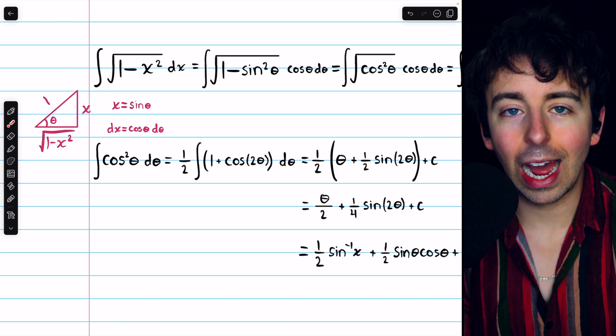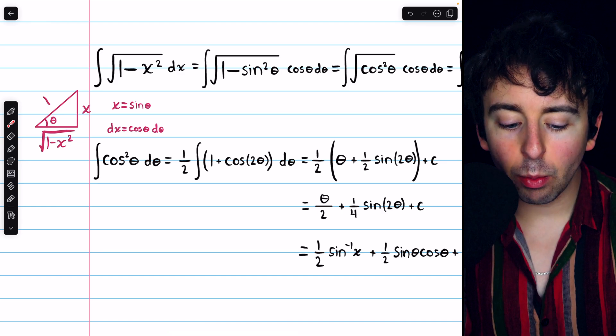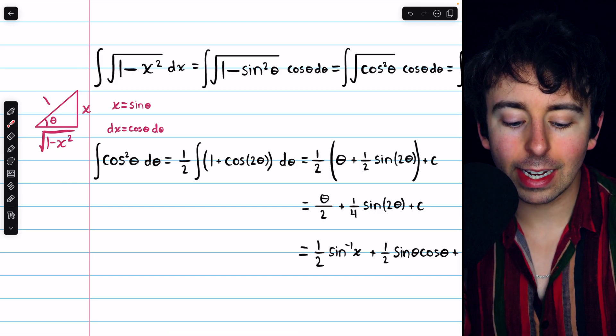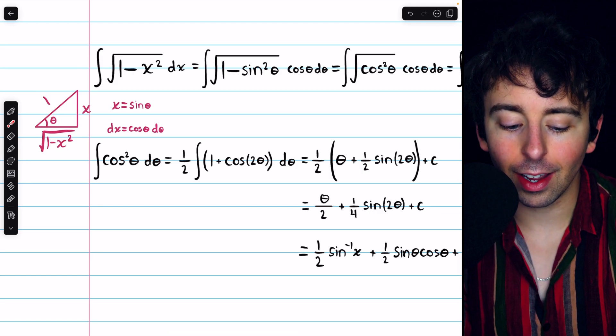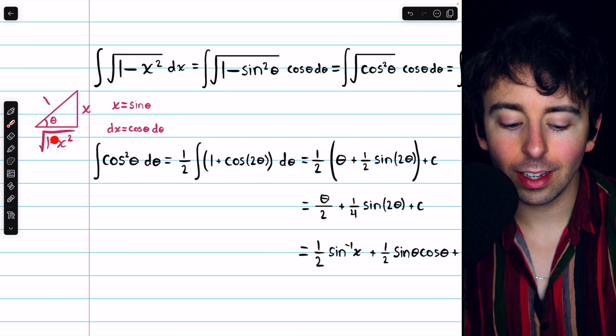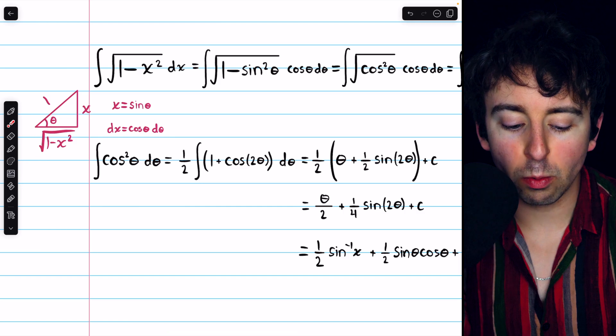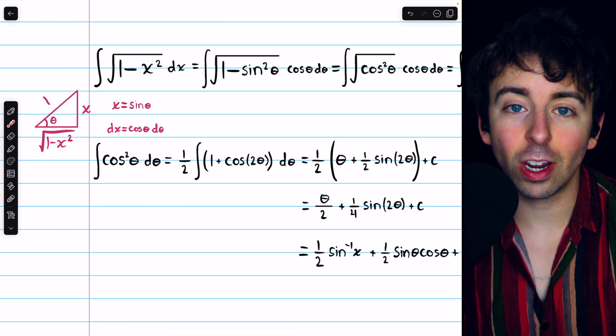Then, by the Pythagorean theorem, that would force the adjacent side to be the square root of 1 minus x squared. Hence, cosine of theta is this adjacent side over the hypotenuse. The adjacent side is just the square root of 1 minus x squared, and divided by the hypotenuse doesn't change it.